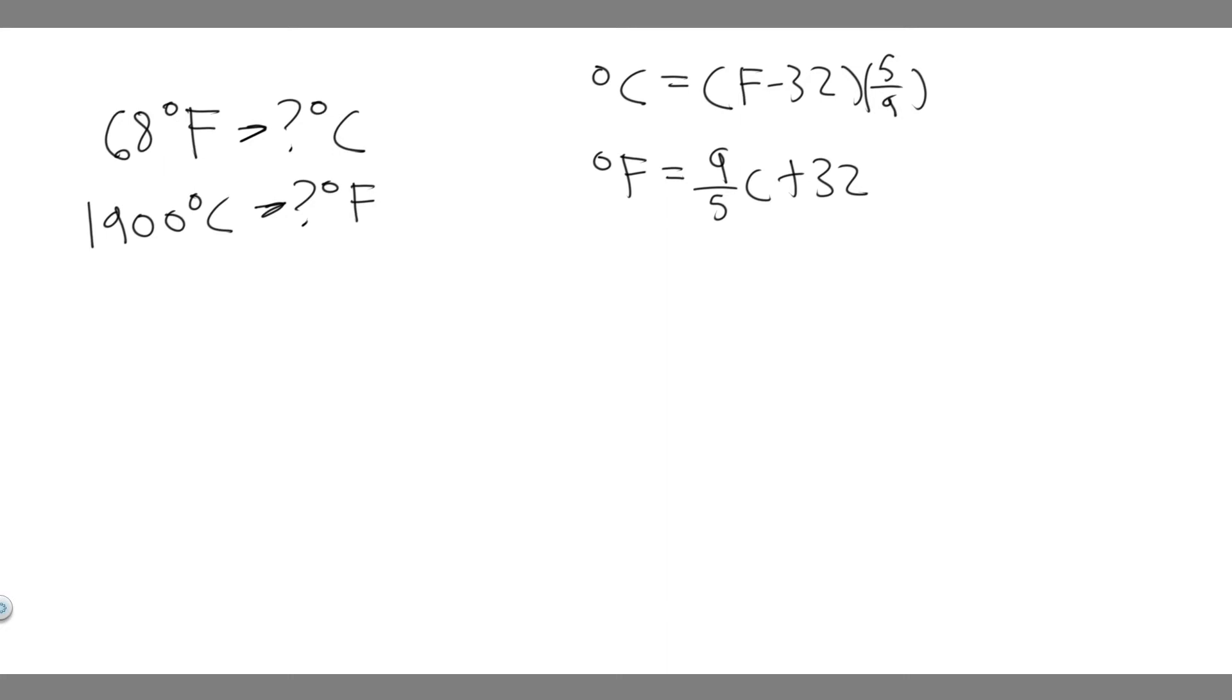And so in order to convert, you can use these formulas right here. If you want to convert to Celsius, you take the Fahrenheit value minus 32, multiply by 5 over 9. And to convert from Celsius to Fahrenheit, you plug in the Celsius value, multiply by 9 over 5, and then add 32.